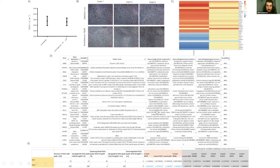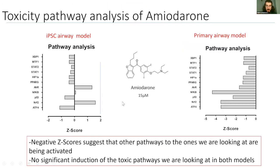For amiodarone, on the other hand, we have 32 differentially expressed genes for the IPSC and 280 for the primary, so the primary was more affected by it. The TEER is unchanged, as well as the barriers on brightfield. We see similar pathways — no activation, negative Z-scores — which means that other pathways to the ones we are looking for are being affected.